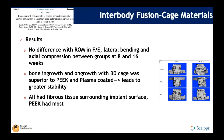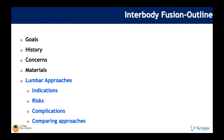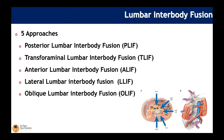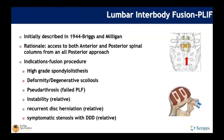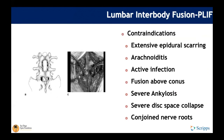There are five lumbar interbody fusion approaches: PLIF, TLIF (transforaminal lumbar interbody fusion), ALIF (anterior lumbar interbody fusion), lateral, and OLIF (oblique lumbar interbody fusion). Briggs and Milligan first described the PLIF in 1944, with the rationale of obtaining a 360-degree lumbar fusion from a posterior approach alone, avoiding anterior access. Indications are primarily lumbar degenerative pathology; contraindications include arachnoiditis and extensive epidural scarring.